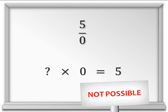Now, what about a number, say 5 over 0? What number times 0 is equal to 5? This is impossible, because we know that any number times 0 has to be equal to 0.